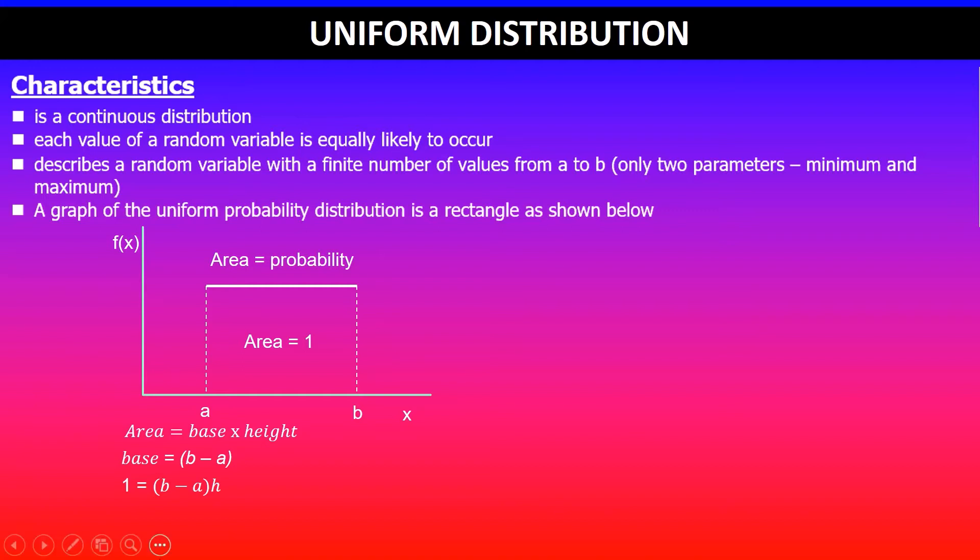So the total area will be one. One is equal to base, which is (b - a), times the height. We can use this to find the height of this rectangular distribution. So quickly rearrange - it's multiplied by h, so we'll make h the subject.